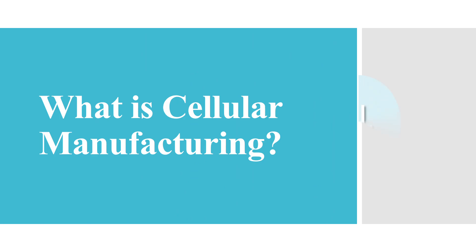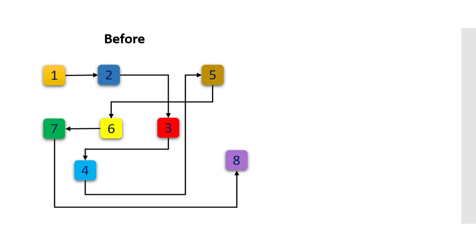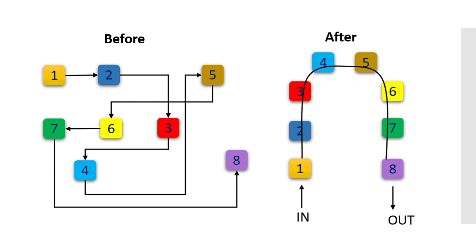Let us first understand what is meant by cellular manufacturing. Looking at this photo, you can observe that the arrows are moving in sequence from one to two, two to three, three to four — but these numbers are not aligned sequentially. It is in a very haphazard format, making it very difficult to move pieces from one station to the next in this crisscross manner.